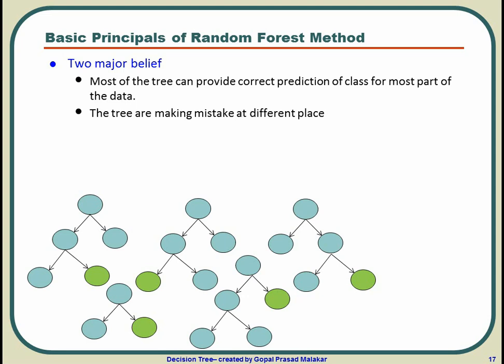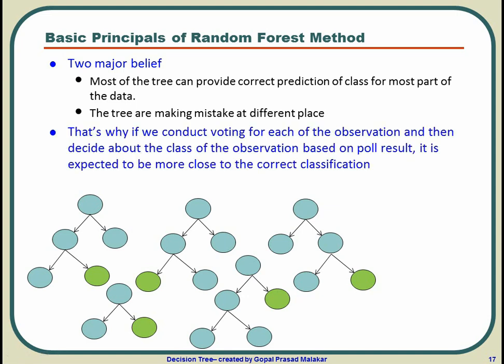So how can you use these two pieces of information simultaneously to get a better prediction? Think of, if you conduct a poll and if in the first case you are getting y, in the second case you are also getting, second tree also is saying y, third tree is saying y, fourth tree is saying y, fifth tree is saying n, what will you take? You will take y.